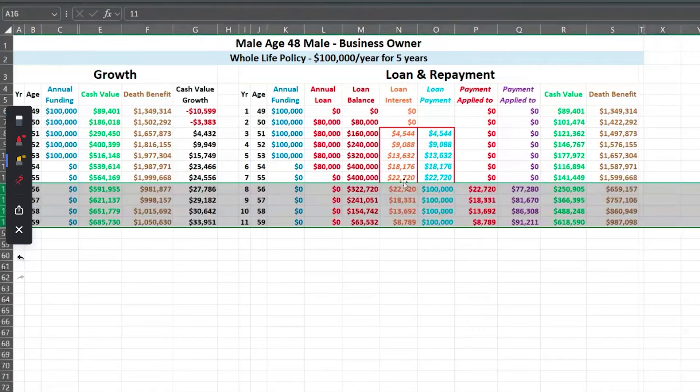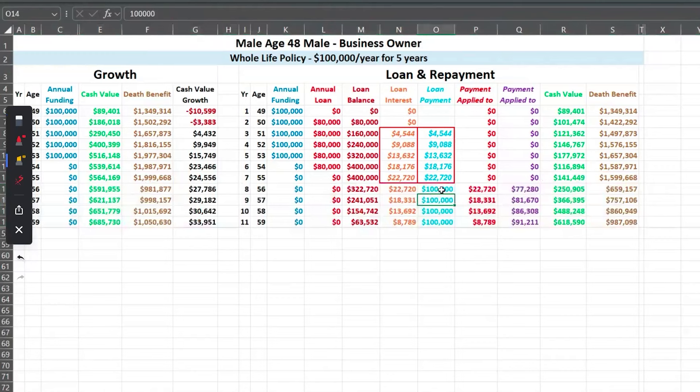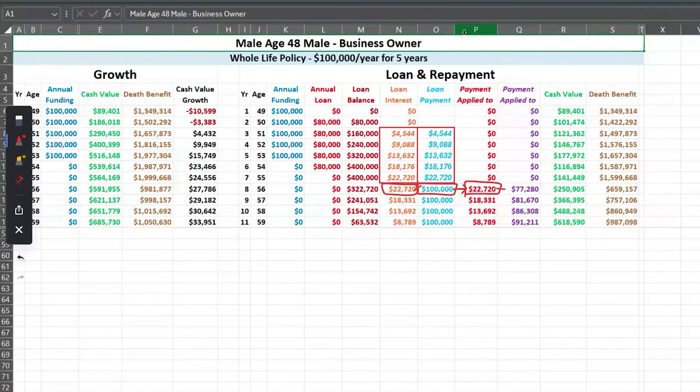So now we're going to begin to repay it at $100,000 per year. So here we've got the interest that comes due but we're not going to pay interest only, we're going to pay $100,000. Of which $22,700, the interest, that's how much is applied to the interest. And the rest in purple is applied to the loan principal. And what'll happen: the cash value will come up, the death benefit will too.